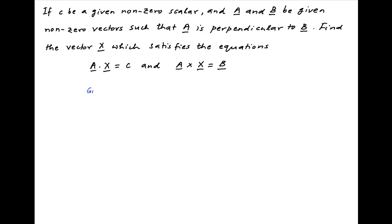We are given that the vector cross product a cross x is equal to the vector b. Taking the cross product with vector a on both sides, we get on the left hand side the vector triple product a cross (a cross x), and the right hand side is equal to a cross b.